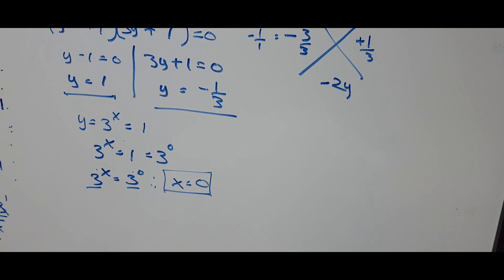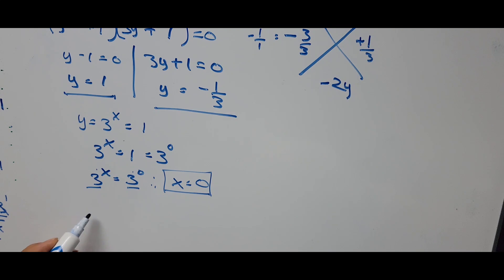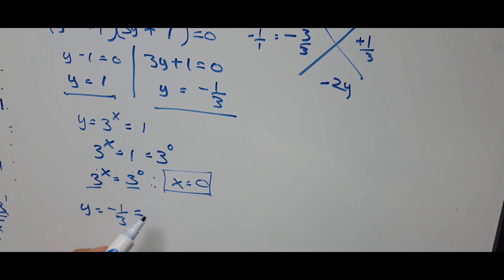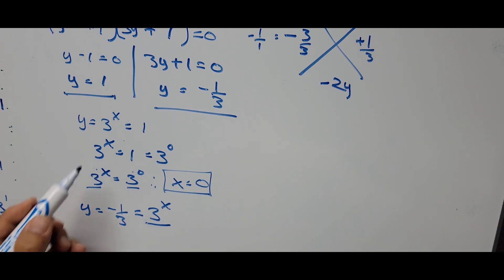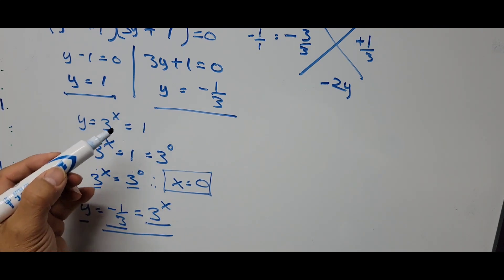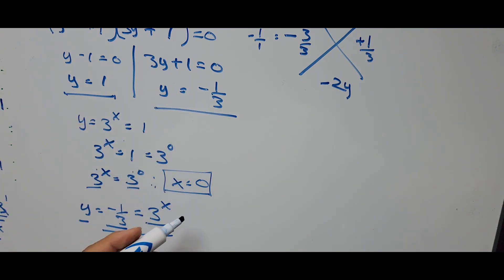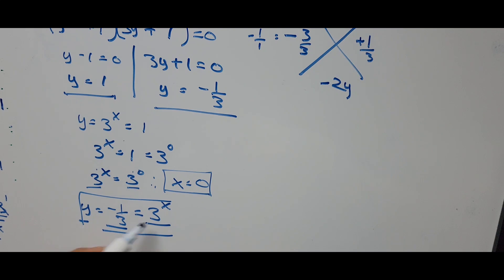For the other value, y equals negative one-third. Since 3 to the power x must always be positive, we cannot use y equals negative one-third. So we discard that solution and use y equals 1 instead. Therefore the value of x is 0.